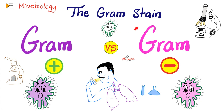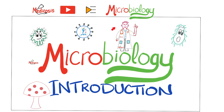Today, we will talk about the gram stain, the technique of the gram stain, and we will compare between gram positive and gram negative — the purple versus the pink. Gram is a name of a scientist, so this should be upper case G. Please watch the previous video before this one.